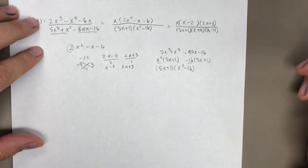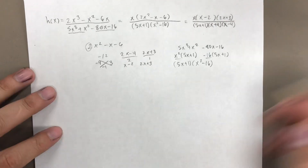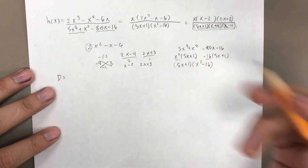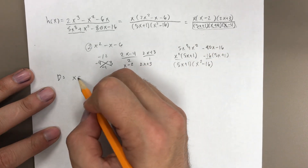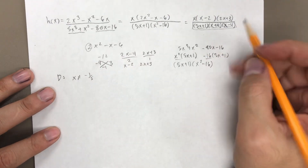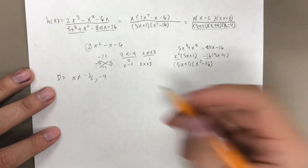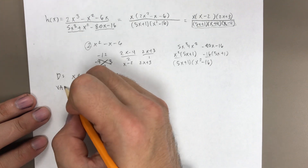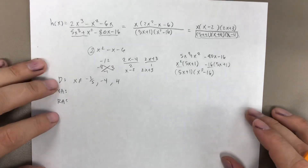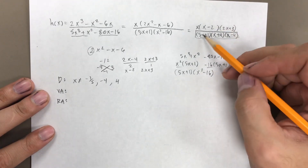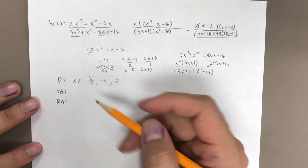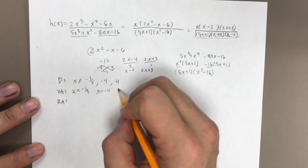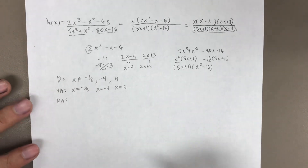Now let's find the asymptotes, starting with the domain. The domain comes from the denominator: each factor cannot equal zero. So 5x plus 1 ≠ 0 means x ≠ negative 1/5. x plus 4 ≠ 0 means x ≠ negative 4. x minus 4 ≠ 0 means x ≠ 4. None of these factors cancel with the numerator, so all three domain restrictions are vertical asymptotes. There are no removable asymptotes.